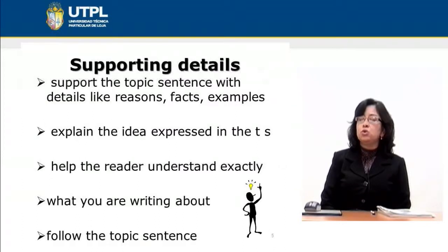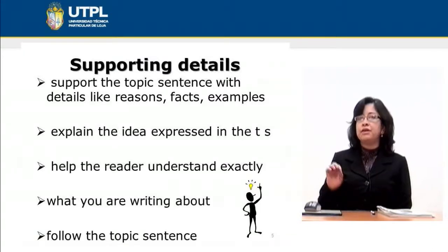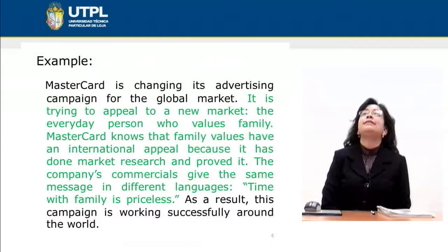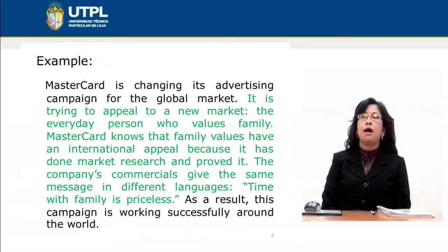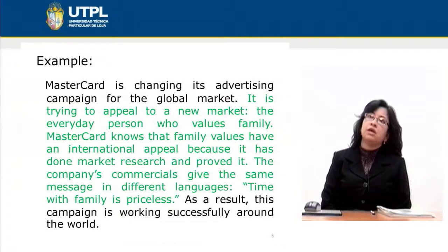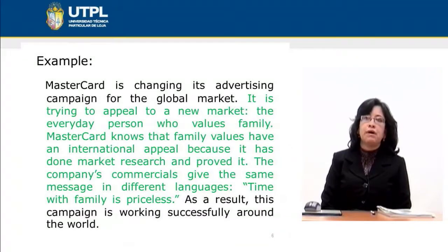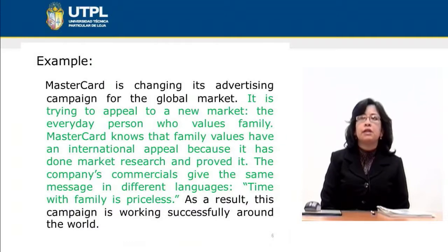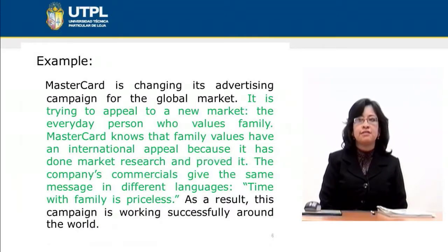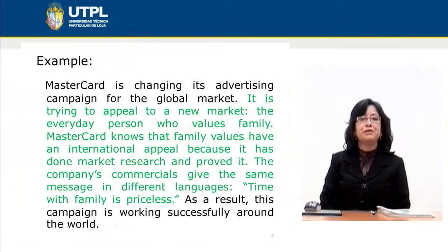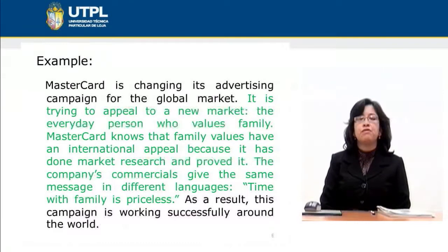The topic sentence is usually at the beginning of the paragraph, and after it we find the different supporting details. In the example we previously analyzed, the supporting details come exactly after the topic sentence, which is the first sentence. The supporting details include: 'It is trying to appeal to a new market — the everyday person who values family.' Then: 'MasterCard knows that family values have an international appeal because it has done market research and proved it.' And: 'The company's commercials give the same message in different languages: time with family is priceless.'